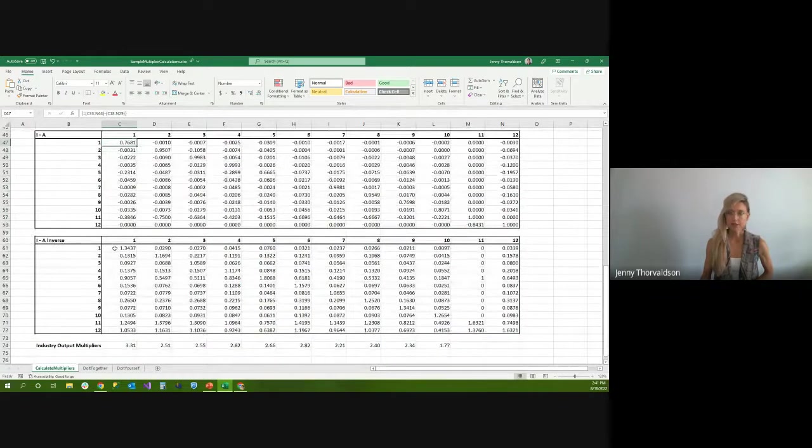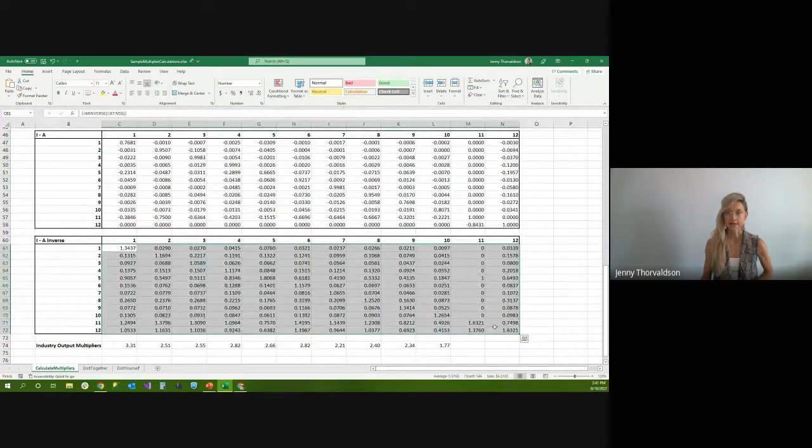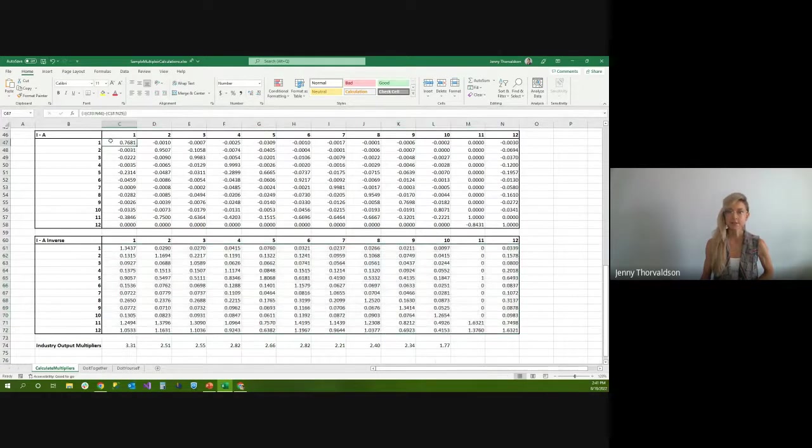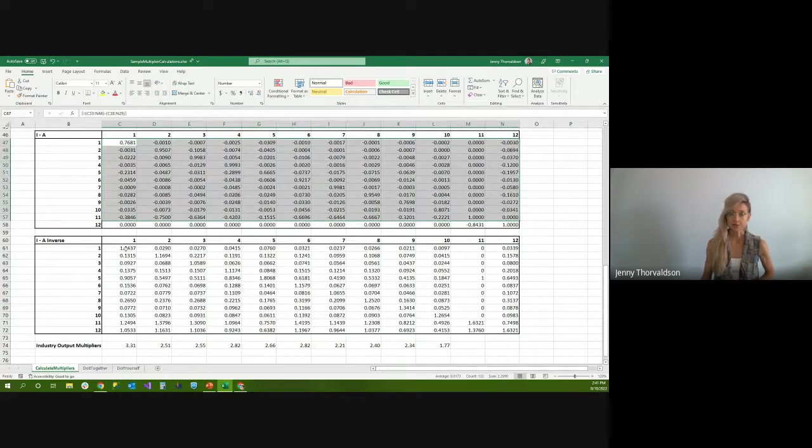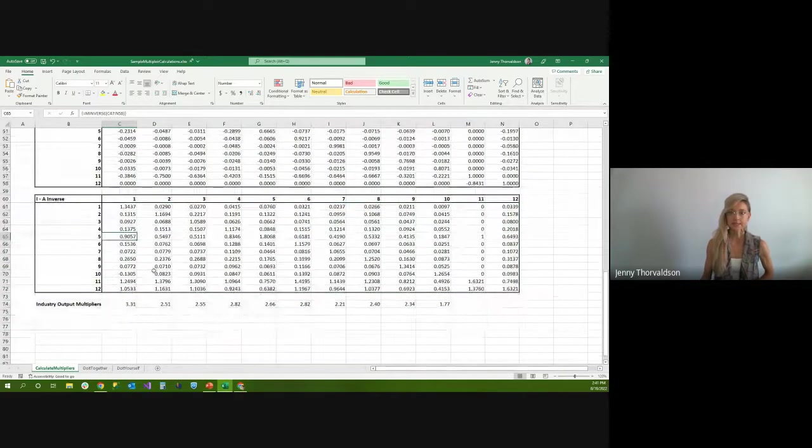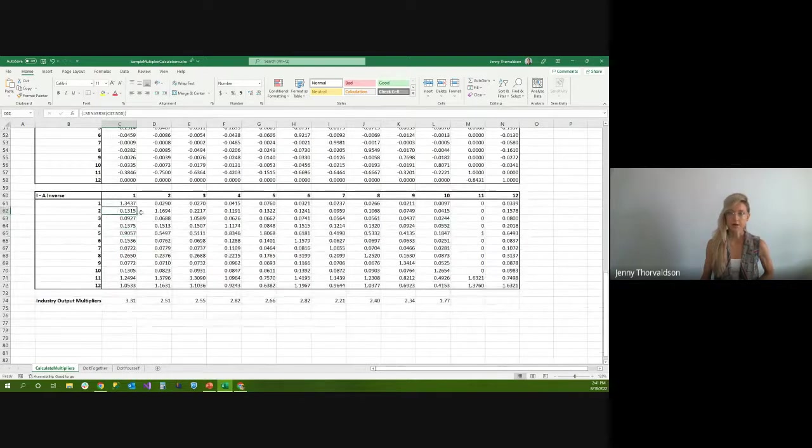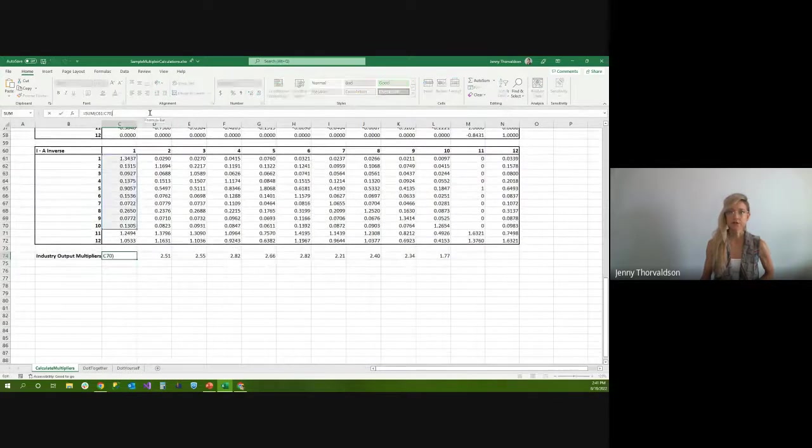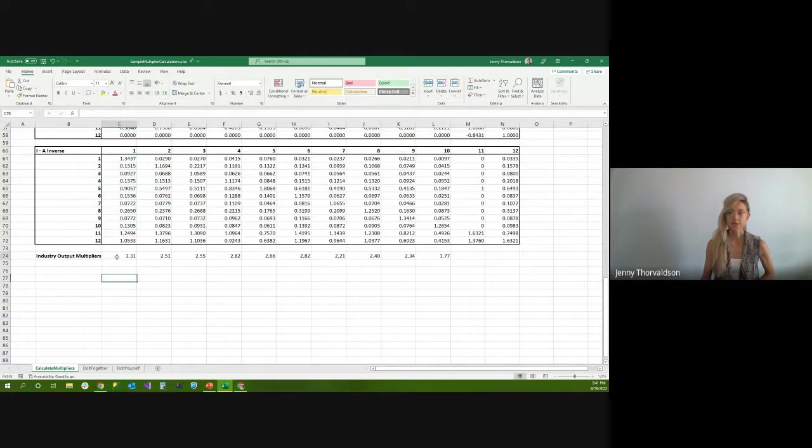Then we have to invert that matrix. This guy right here is our I minus A inverse. This thing that I have highlighted here is the inverse of the matrix right above. And as I mentioned to you, this inverse is our multiplier's matrix. Each of the values in here is a detailed multiplier. This one right here that I have highlighted is saying this is the multiplier effect that industry one has on industry two. These are detailed multipliers. Most folks are interested in the summary multipliers, which is the sum of an industry's multiplier effect on all the other industries. Right here we can see that industry one's summary output multiplier is 3.31. And all these other industries have their summary multipliers hovering around somewhere in the two range.